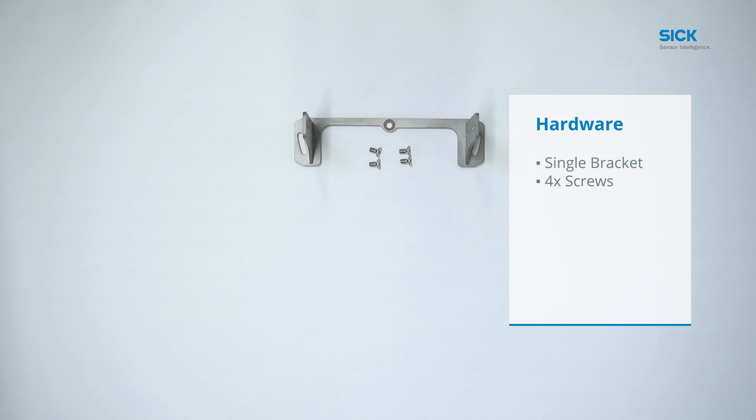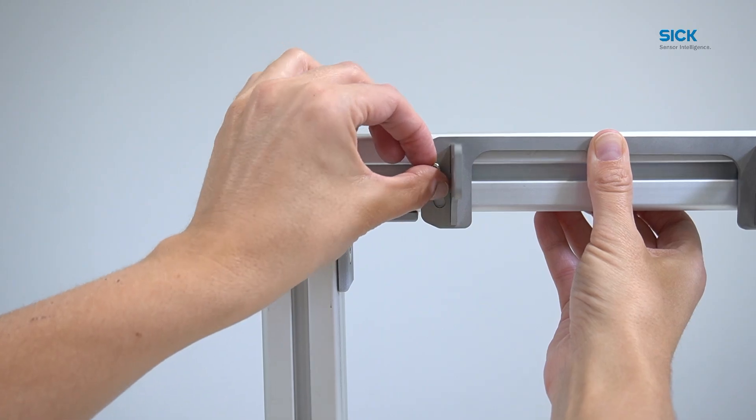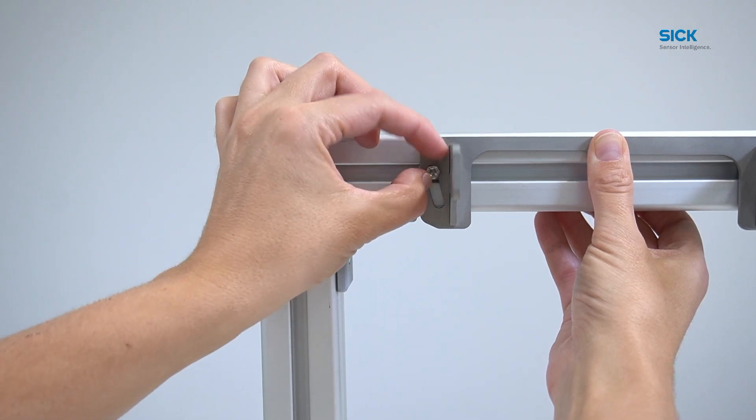In addition to the scope of delivery, the sensor, screws for wall mounting, and the associated tools are required. In our example, we mount the bracket on an item profile.